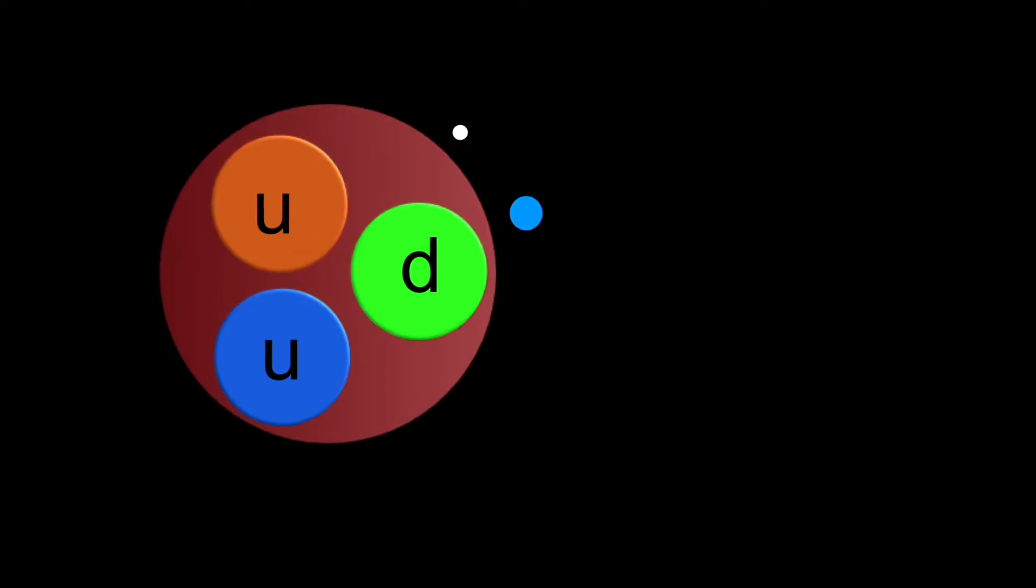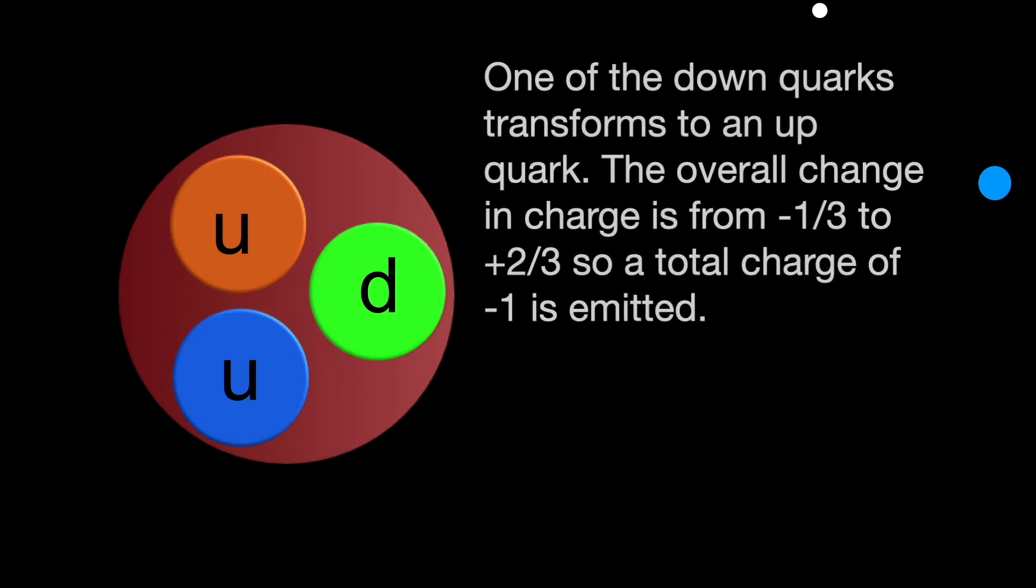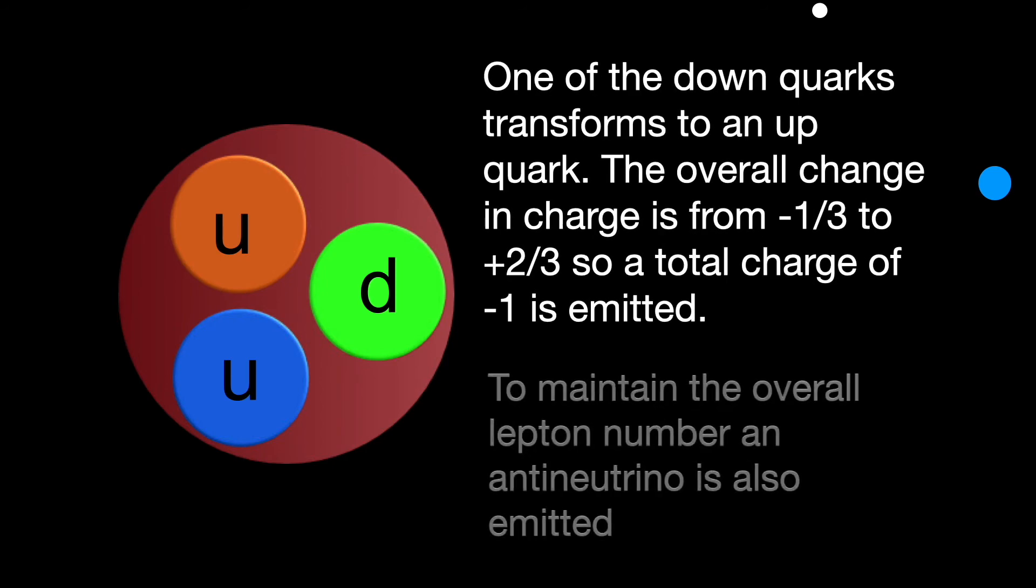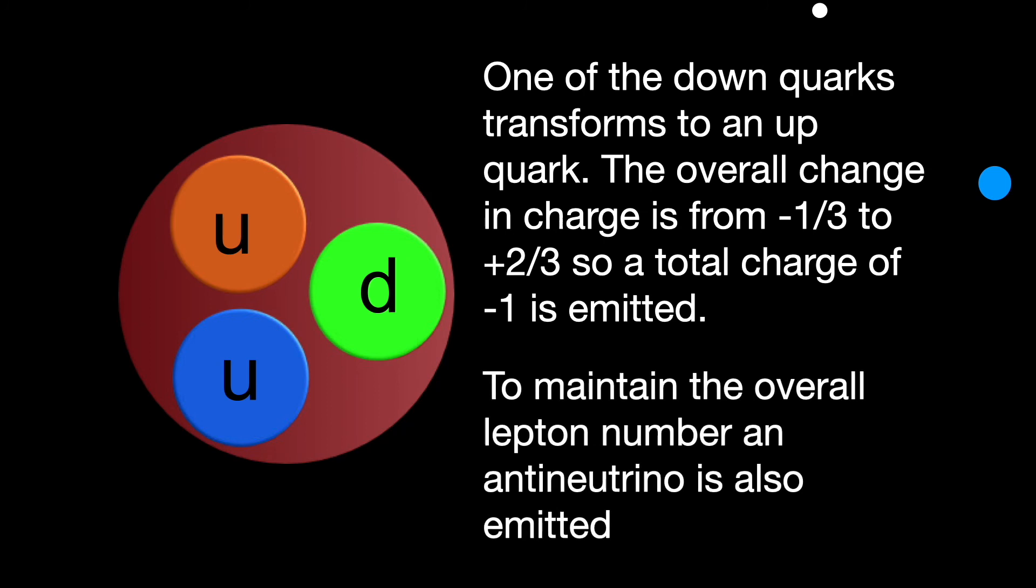On decay one of the down quarks changes into an up quark emitting the electron and anti-neutrino. The charge changes from -1/3 to +2/3. So the total charge change is -1. The emission of an anti-neutrino ensures that the lepton number remains constant.